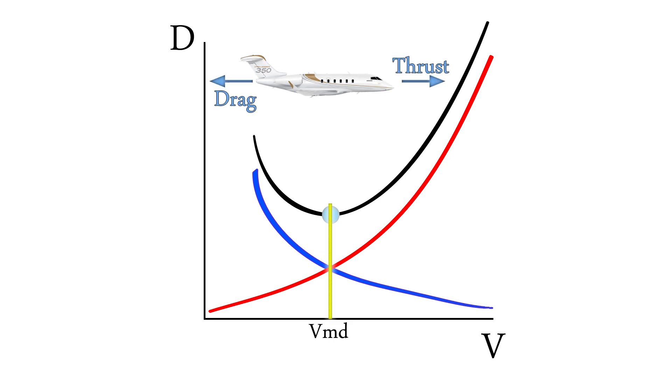If we were to fly at a certain speed, the engines would use the least amount of fuel to produce the thrust needed to balance out this amount of drag. This speed is called the minimum drag speed, VMD.